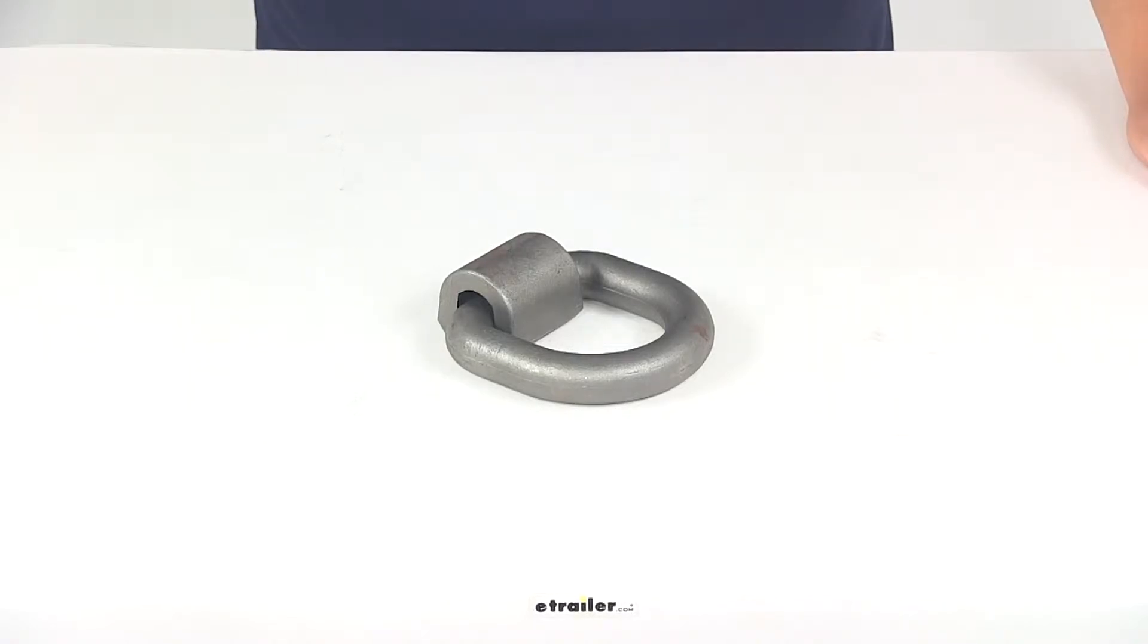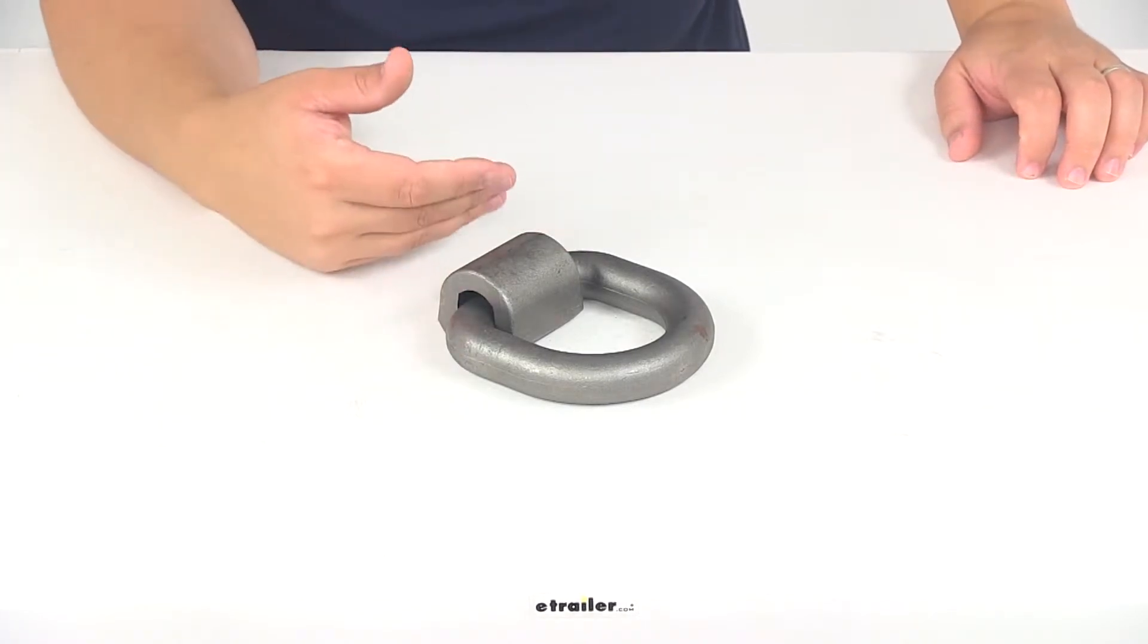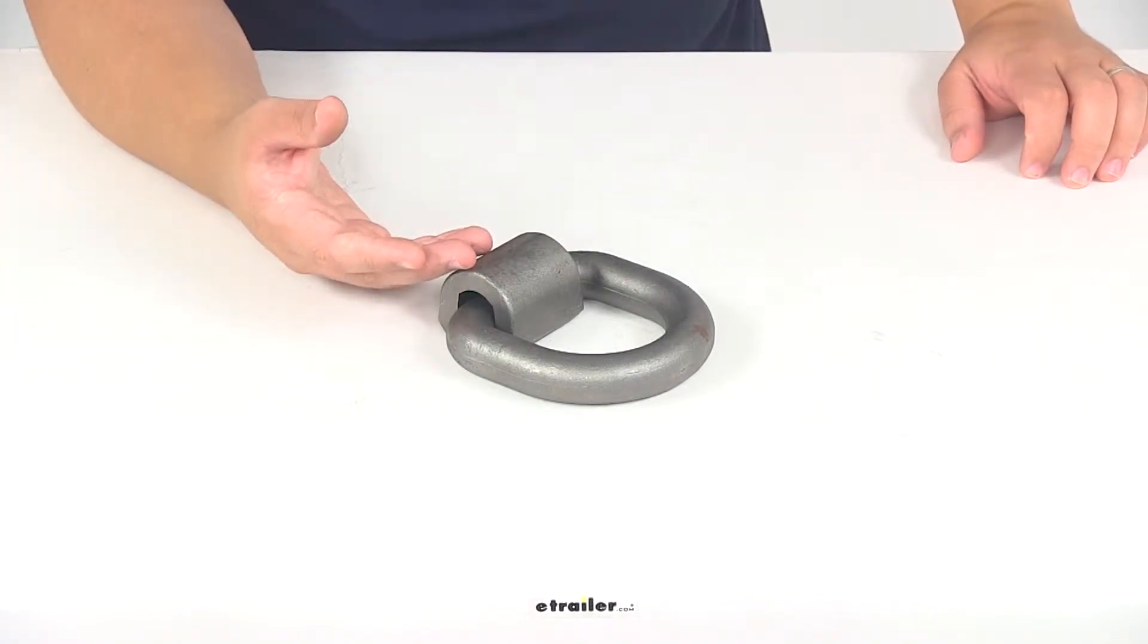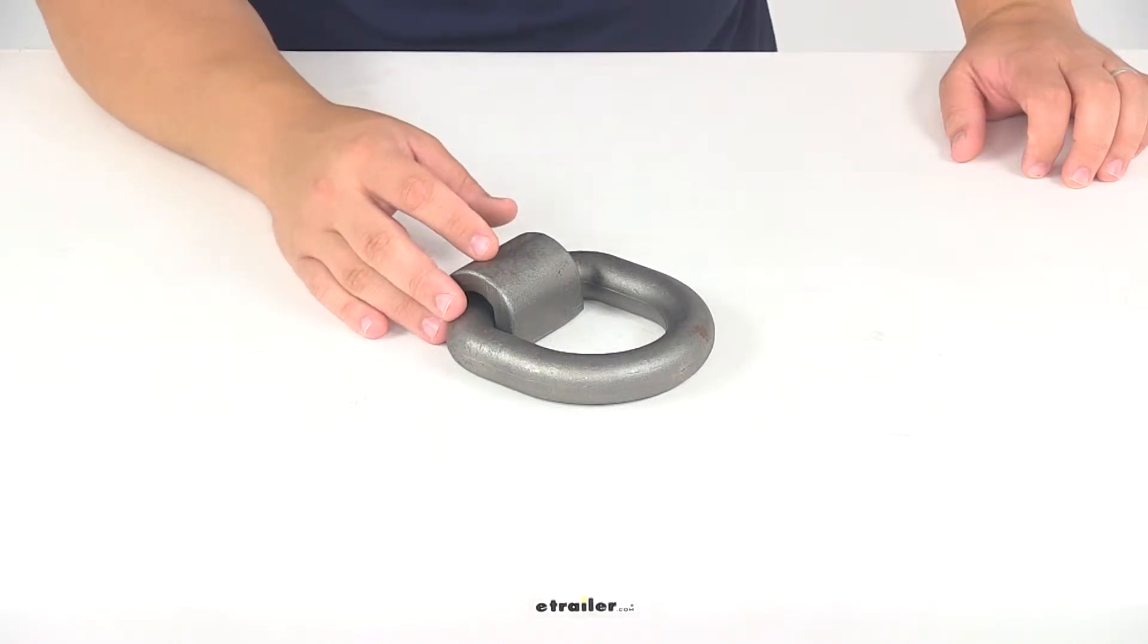Today we're taking a look at part number C83770, the Kurt heavy-duty D-ring tie-down anchor. It creates a stable tie-down point in your trailer or truck bed, making it great for providing an attachment point for securing ropes, straps, or bungees.